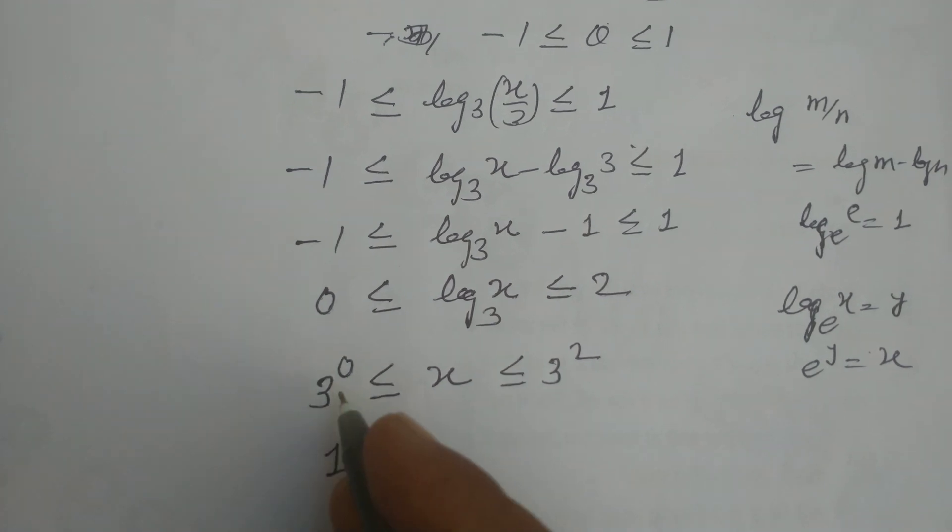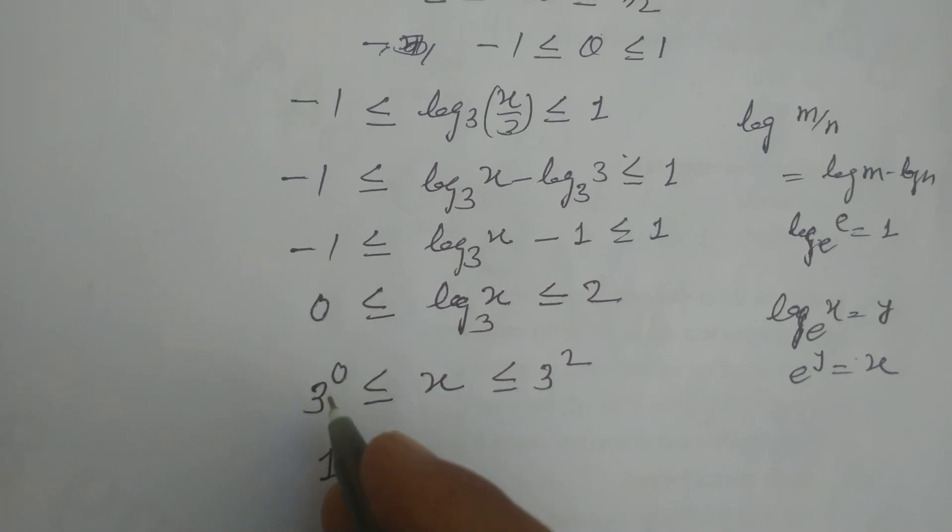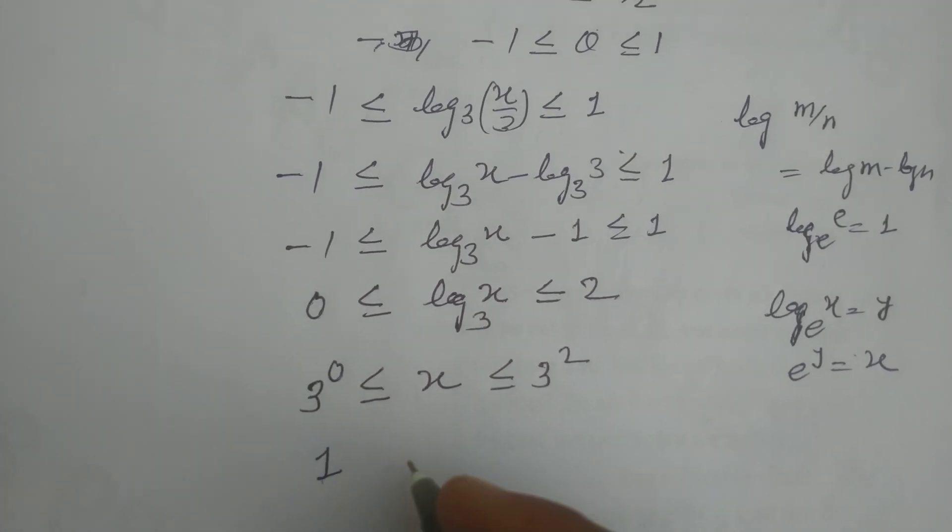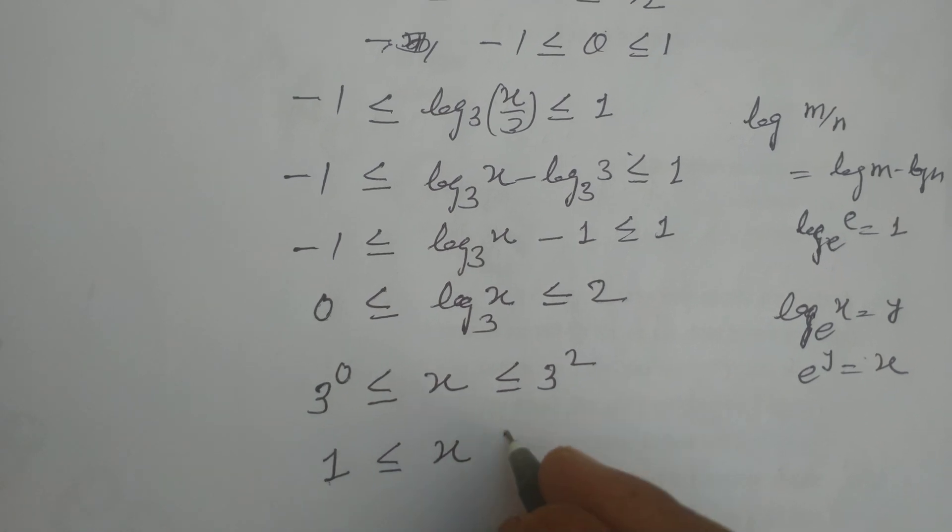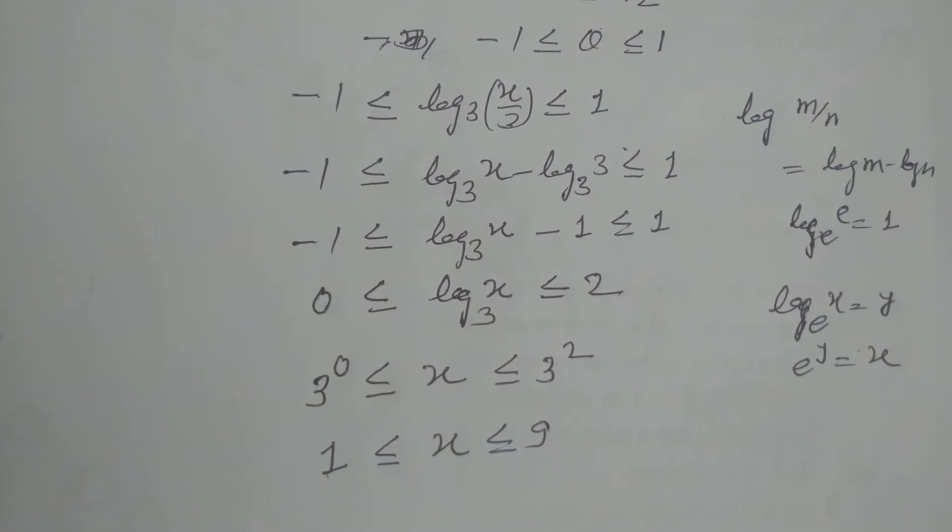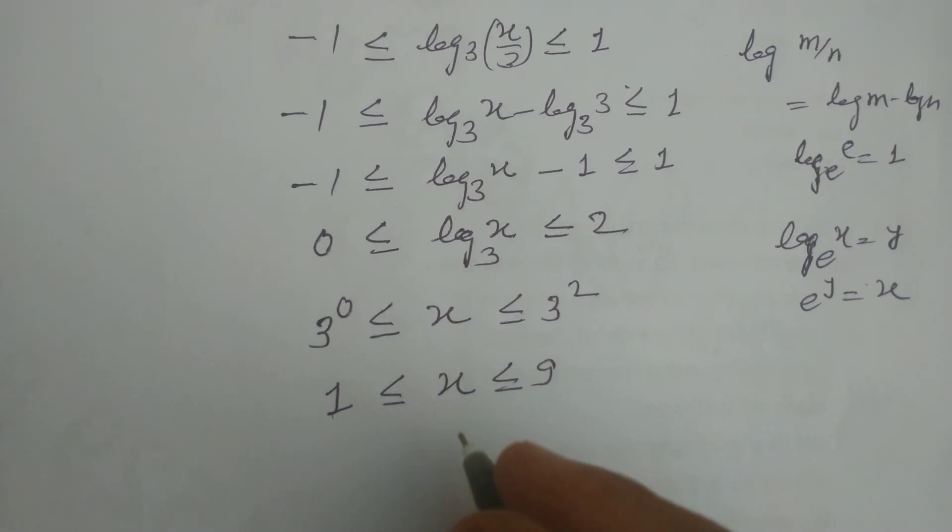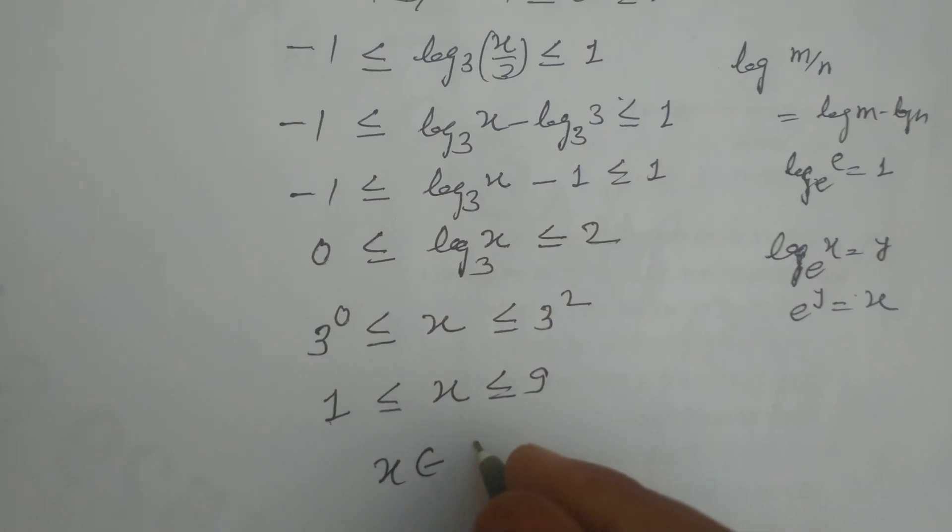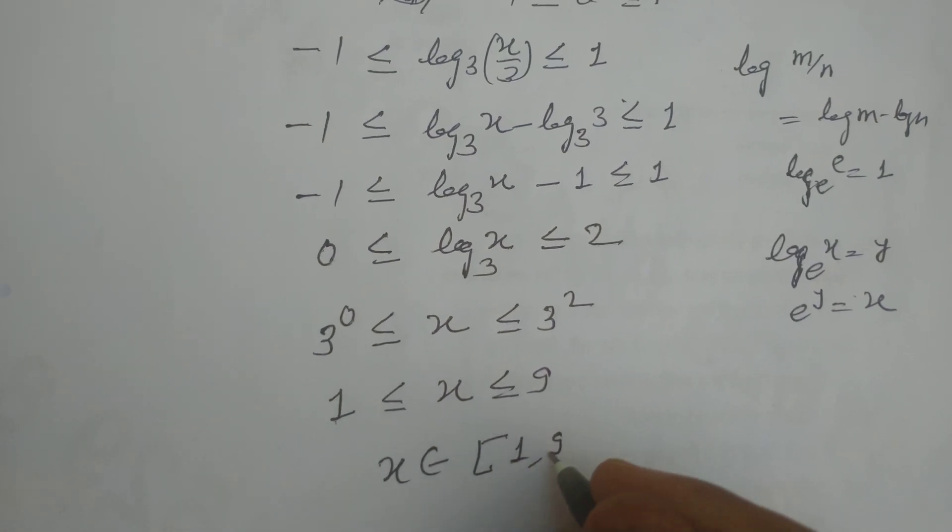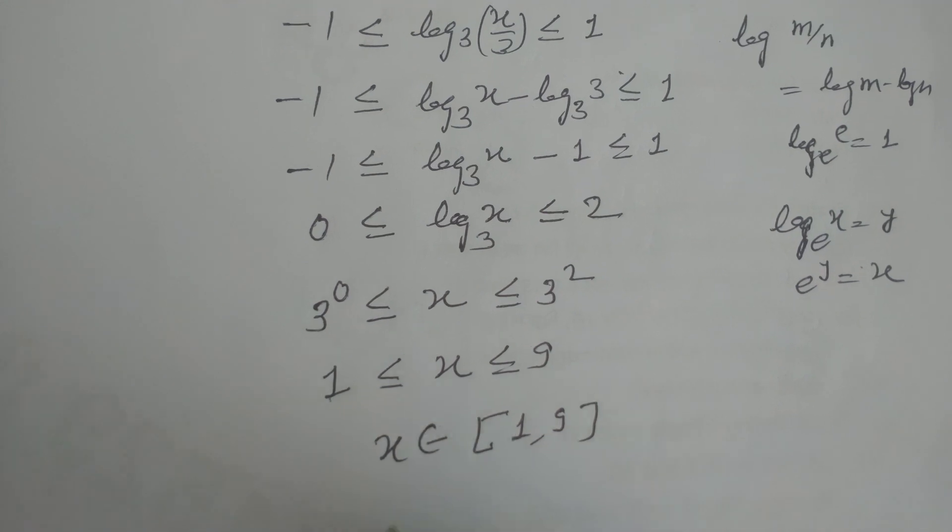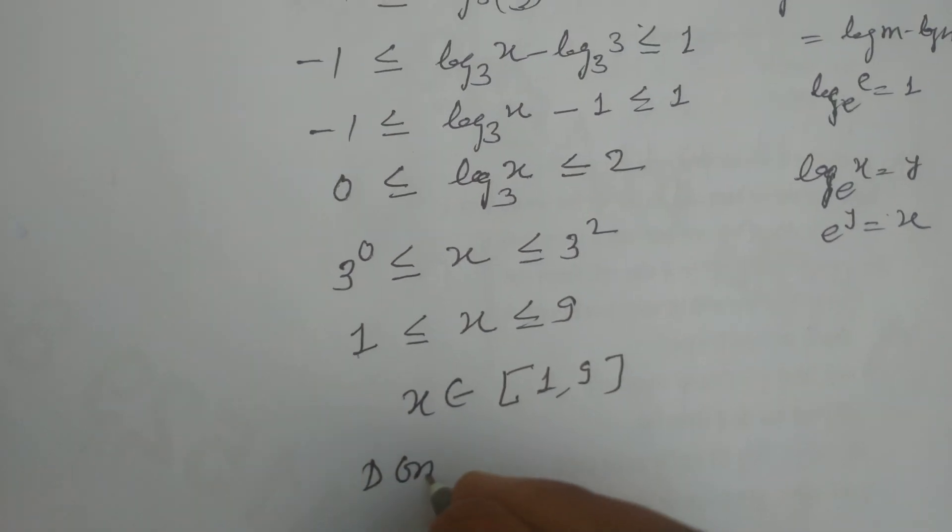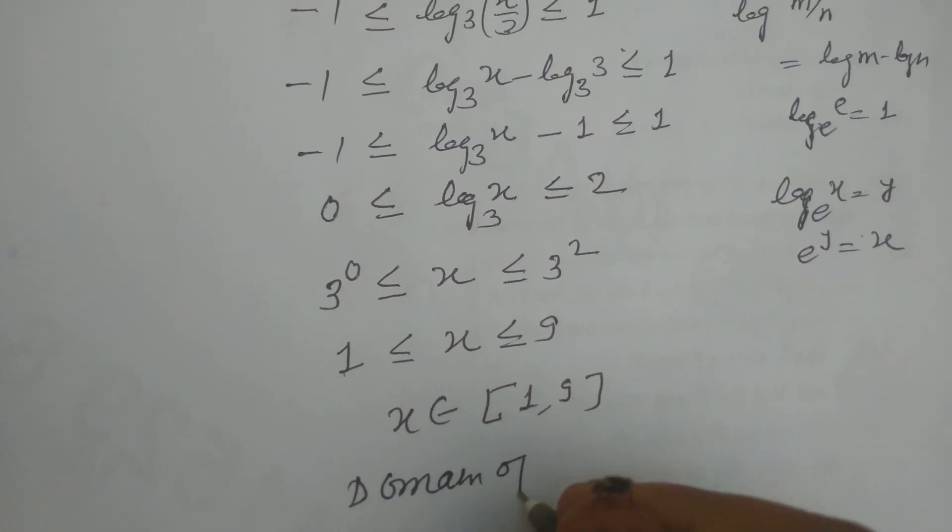So this is 1. The power of 0 of any number is 1. This is x and this is 3 to the power of 2 which is 9. Therefore x lies between 1 to 9 and this is the domain of the function.